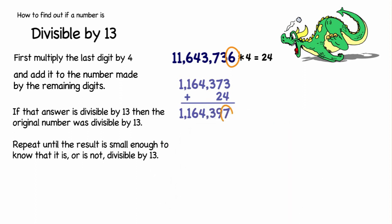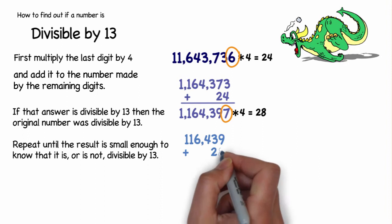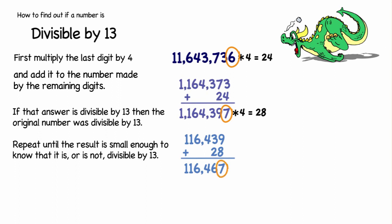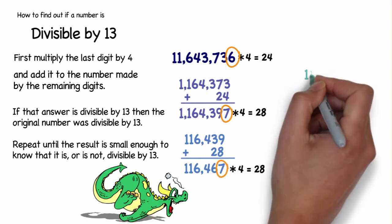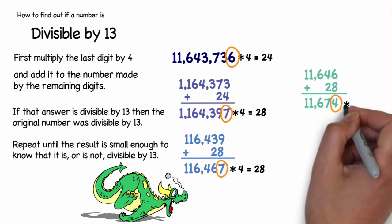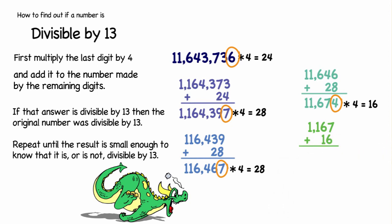116,439 plus 28 equals 116,467. We can do the same thing again with 7. 7 times 4 is 28. 11,646 plus 28 equals 11,674. 4 times 4 is 16. 1,167 plus 16 equals 1,183. 3 times 4 is 12. 118 plus 12 is 130. 130 is divisible by 13. So, 11,643,736 is divisible by 13.